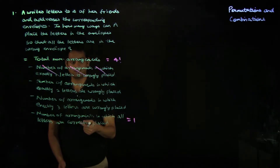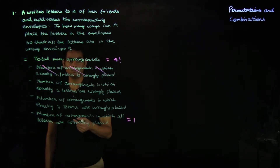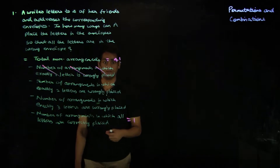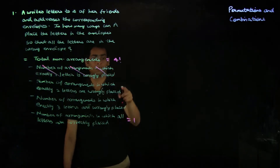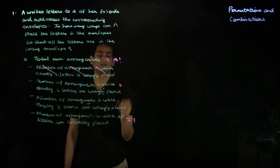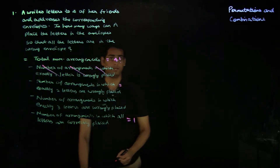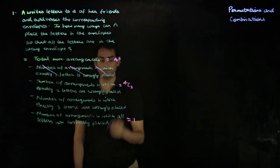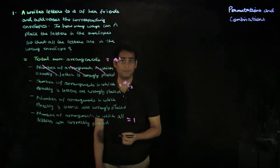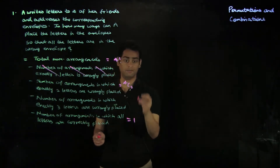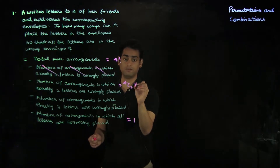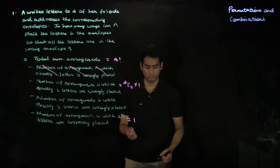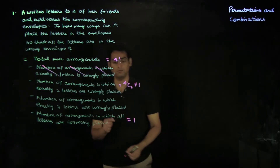The number of arrangements in which exactly two letters are wrongly placed: you choose two letters and place them in the wrong envelopes while the remaining two are in the right envelopes. There is only one way in which two letters can swap into each other's wrong envelopes, so that gives you one way.